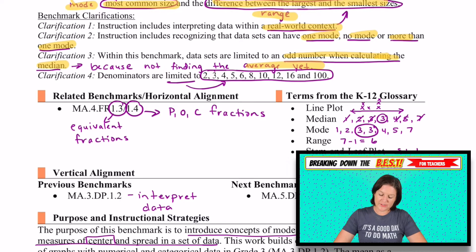Because when we're finding the median, we're crossing off the smallest and then the largest and the next smallest and next largest. We need it to be odd for fourth grade to determine that median. In fifth grade, it can be an even number because in fifth grade, we will be finding the average or the mean, but we're not doing that yet in fourth grade. And when we have fractions, denominators are limited to 2, 3, 4, 5, 6, 8, 10, all of these right there that you can see.